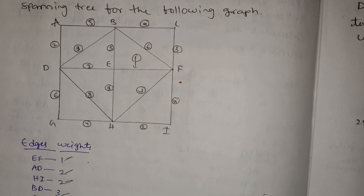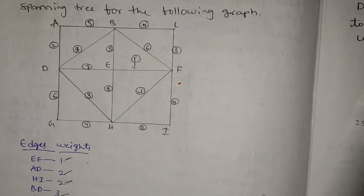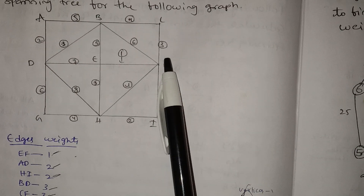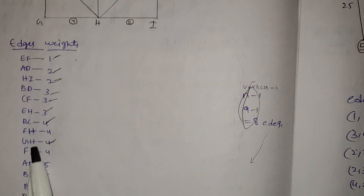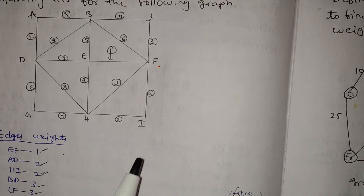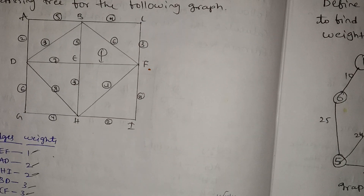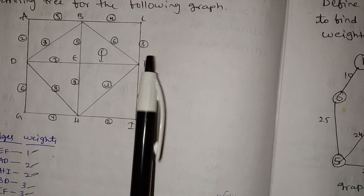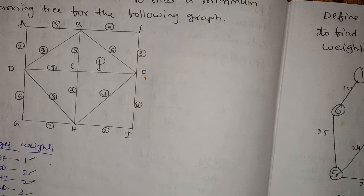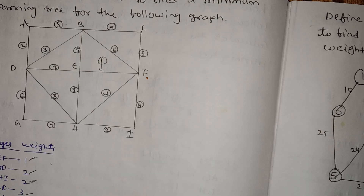Next, edges with weight 4: BC, FH, GH, and FI, weight 4. Then edges with weight 5: AB.